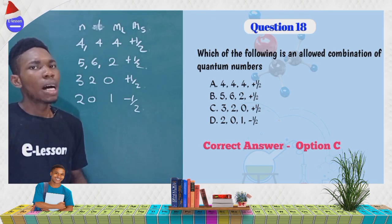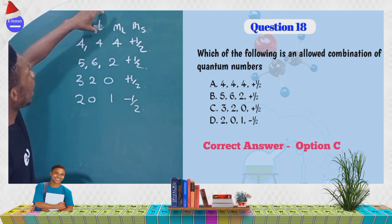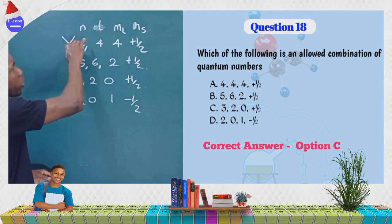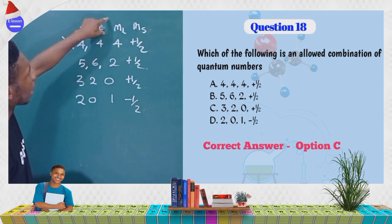On no account must your L, which is the azimuthal quantum number, be the same as your n. On no account must L equal n. That means option A (where n=4 and L=4) is wrong. However, L can be the same as ML.